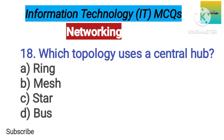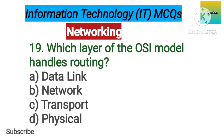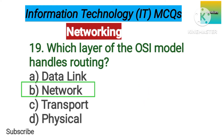Number 19. Which layer of the OSI model handles routing? Option A: Data Link. B: Network. C: Transport. D: Physical. The correct answer is option B, Network.